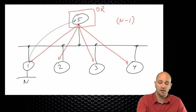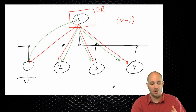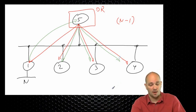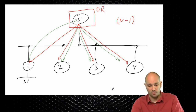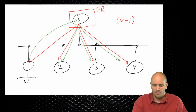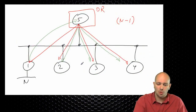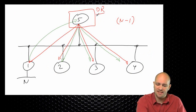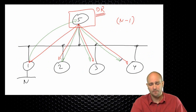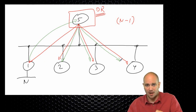When R1 has a network N to advertise, it sends that information to R5 and R5 fans it out where it needs to go. We're not sending the same information from R1 to R5, R1 to R2, R1 to R3, R1 to R4, and then from R5 to 2, 3, 4, and so on. This is the primary role of the designated router: to provide hub-and-spoke-like information exchange inside the shared segment.